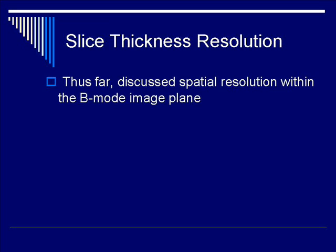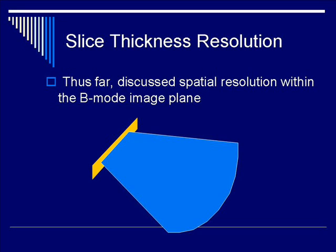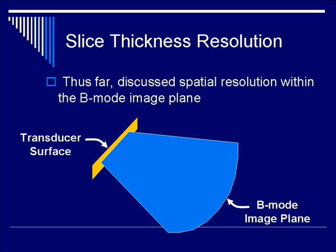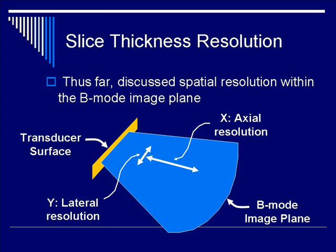So far, we've been discussing spatial resolution within the beam mode image plane, as shown in the cartoon below. The yellow bar denotes the transducer surface, which gives out the ultrasound beam, fanned out as indicated by the light blue signals. In the x-direction, denoted by the white line parallel to beam travel, is the x-direction describing axial resolution. Perpendicular to that is the y-direction, which is perpendicular to beam travel and is described by lateral resolution.